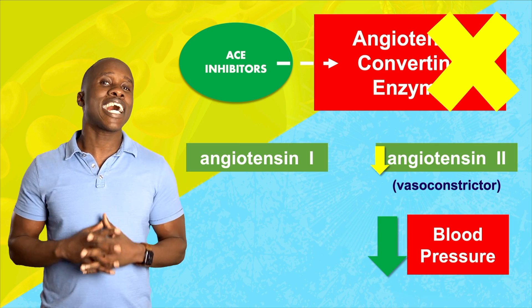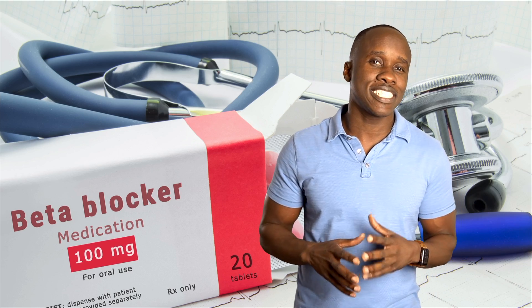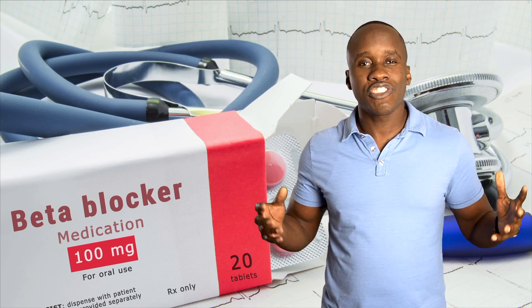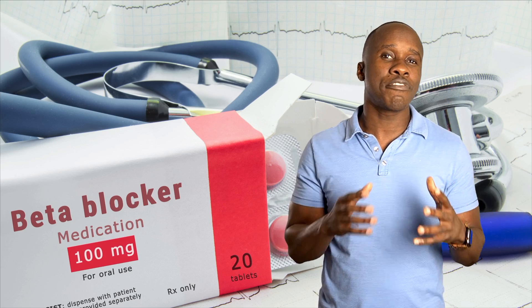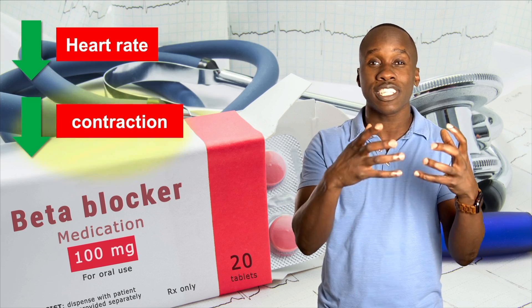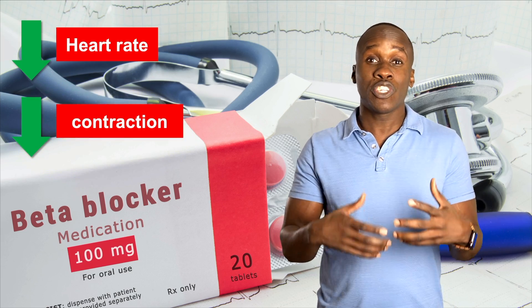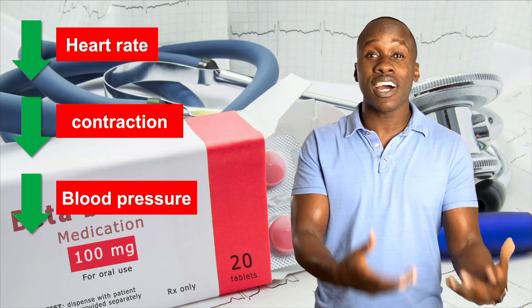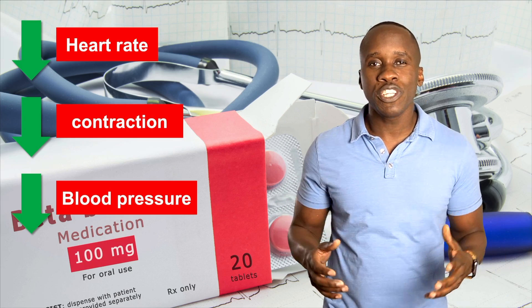The third type of cardiovascular medications that we'll talk about are beta blockers. These drugs have the effect of decreasing heart rate and the force of contraction, which causes blood pressure to go down and slows down the heart rate. They're often used when someone has a cardiac arrhythmia, to prevent heart attack, or in some cases to lower blood pressure.